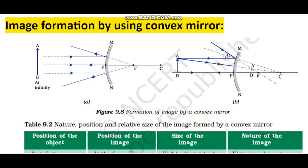We have discussed two mirrors: concave mirror and convex mirror. The concave mirror, which we also call a converging mirror, and the convex mirror, which we also call a diverging mirror. Converging means rays of light will meet at one point, and diverging means rays of light will scatter and not fall at one point. In the concave mirror we discussed six cases, giving two types of images: real and virtual.